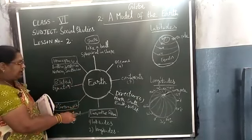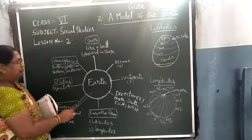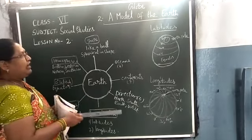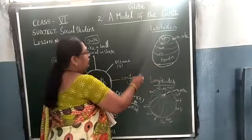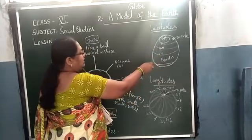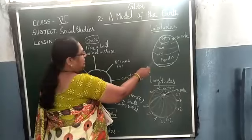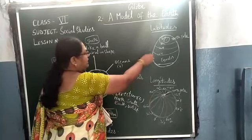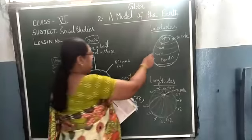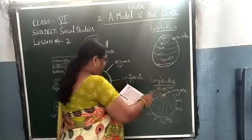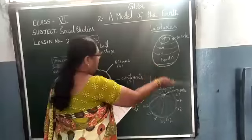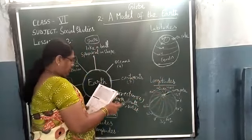Again, you are going to learn the lines on the globe — how the lines will be there. First line will be latitude, second will be longitude. Latitude lines — you have to draw like this. The equator will be in the middle. Latitude is drawn as imaginary lines on the globe from west to east.